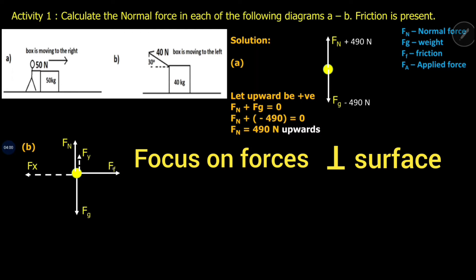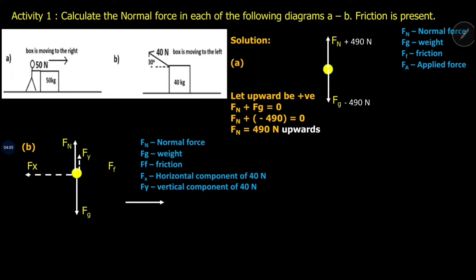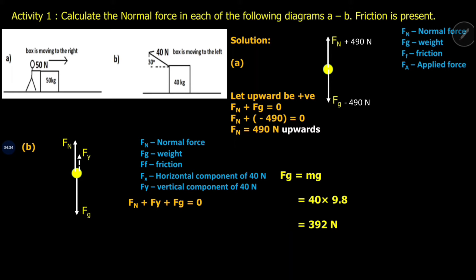To calculate the normal force we only need the vertical forces, because they are perpendicular to this horizontal surface. We're going to remove the forces we don't need and focus on those we do. We equate these forces to zero because there is no movement in the y-direction — these forces are balanced. Fg equals mg, which is 40 times 9.8, giving 392 Newtons.